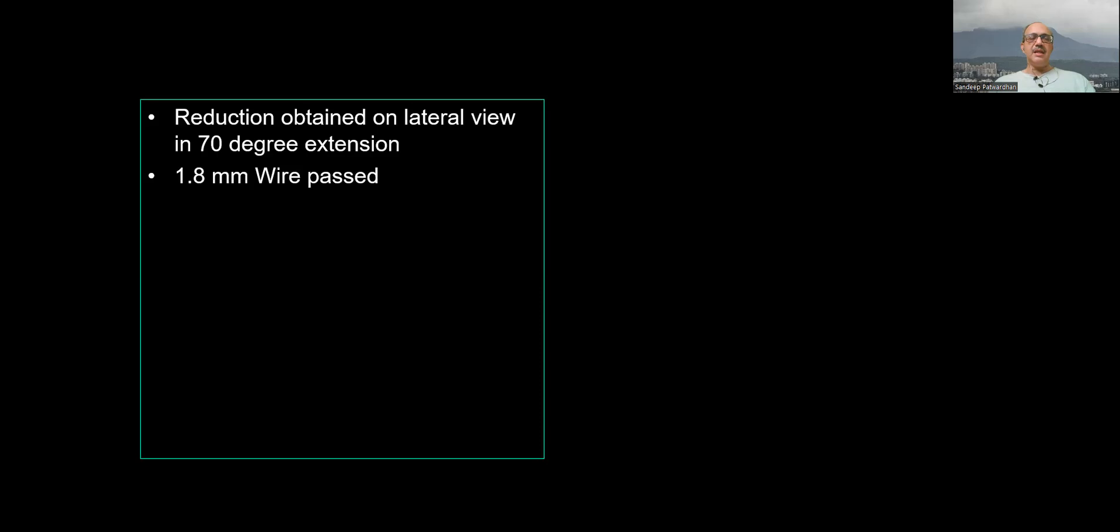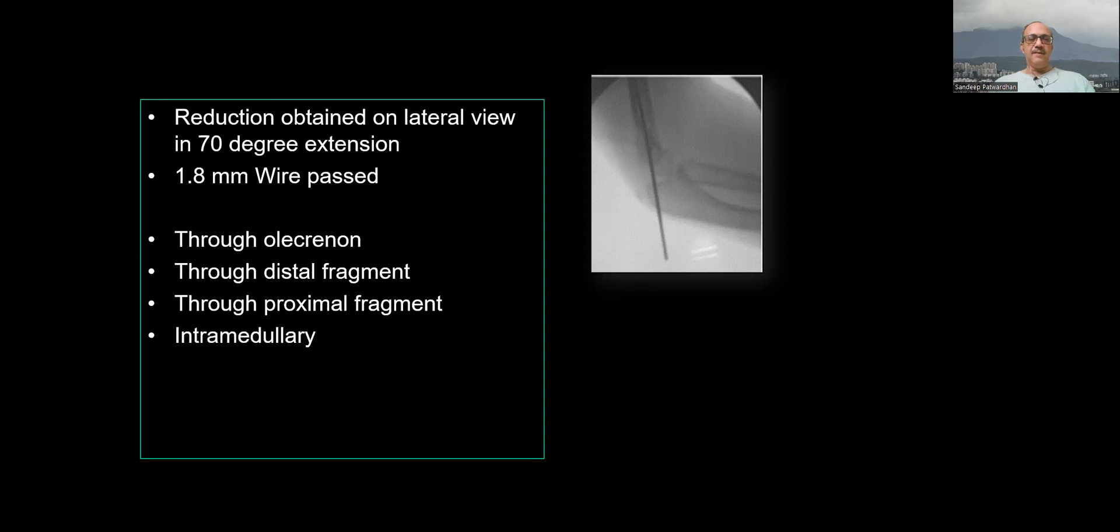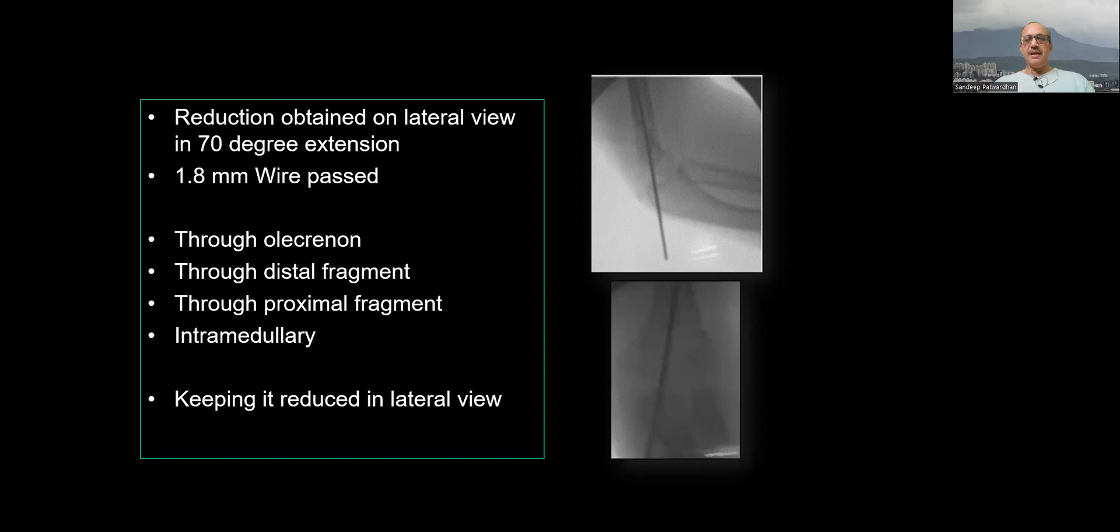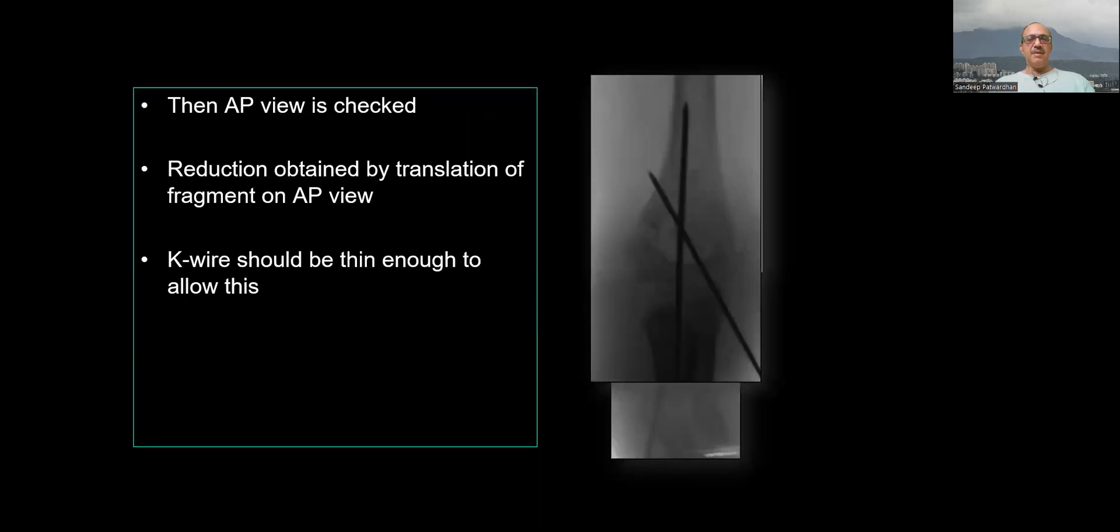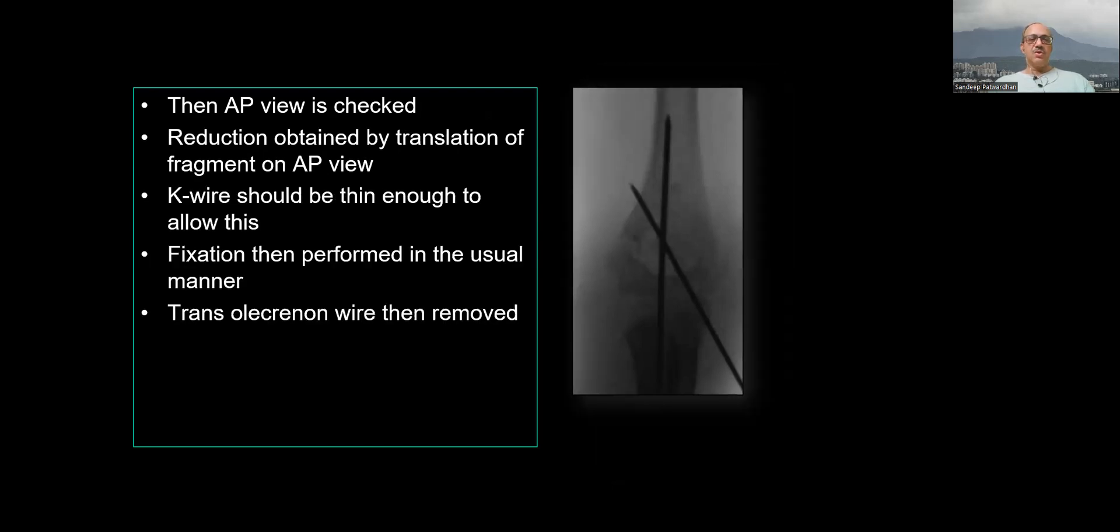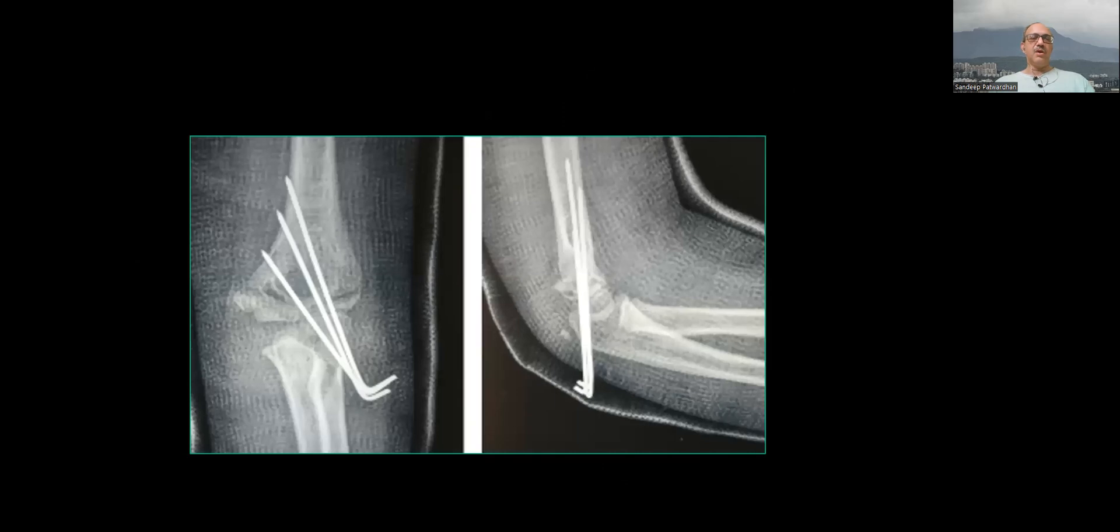And then use a very thin 1.8 mm wire, pass it through the olecranon into the medullary canal after reduction. And then what you can do is since it is very thin and it can toggle intramedullary, it is reduced under lateral, then you take your AP, correct the coronal malalignment and then put a pin to stabilize the pillar and take out this wire, which is trans olecranon.